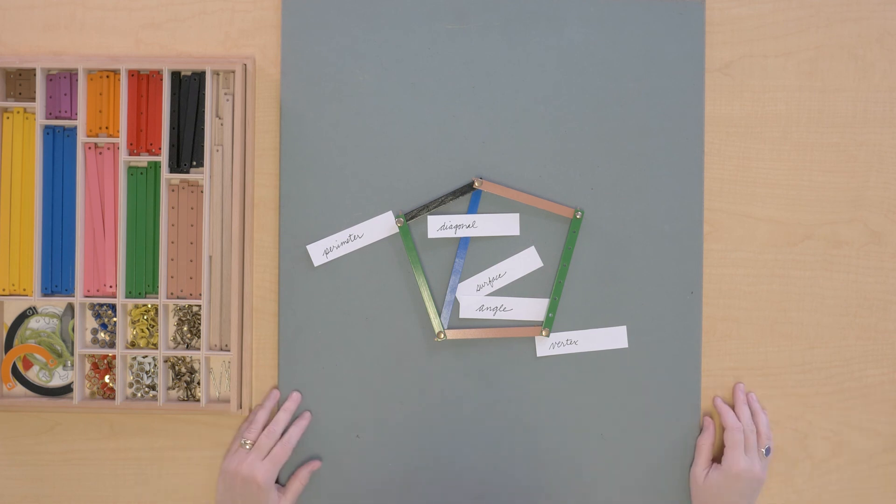If I mixed all these up, could you place them again? Or maybe you'd like to draw some polygons and label their parts or make more with our box of sticks?